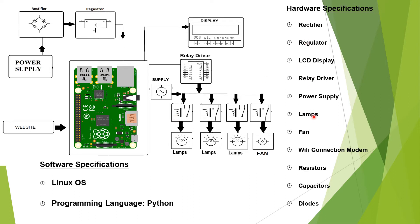These are the things required for this circuit: rectifier, regulator — all coming in the DC power supply — and then we have the LCD display, relay driver, lamps, fan, and Wi-Fi connection. Resistors, capacitors, and diodes all come with the rectifier circuit.